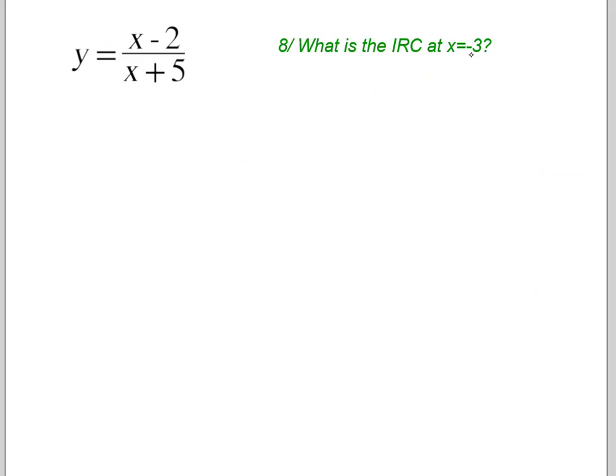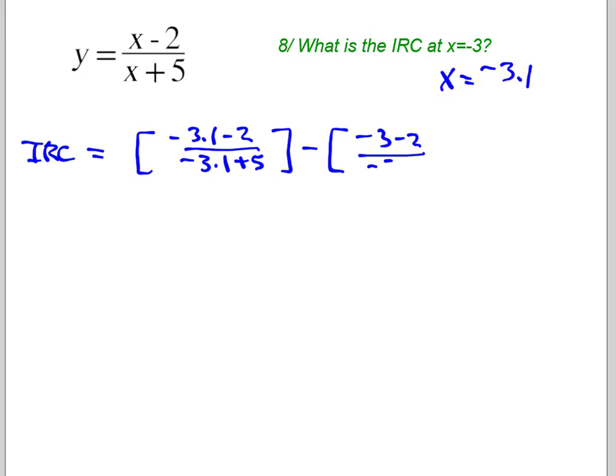So what is the IRC at X equals negative 3? So this is the traditional question we've asked several times this year. So if I'm looking at X equals negative 3, I should choose another X value at, say, negative 3.1. And we just substitute it into our regular IRC question. We just do a slope formula. So we'll take this guy and we'll put in negative 3.1 minus 2, negative 3.1 plus 5, minus... Now we put in our negative 3, negative 3 minus 2, negative 3 plus 5. And all of that is going to be over our H value, or in this case 0.1.